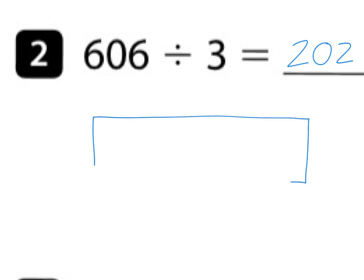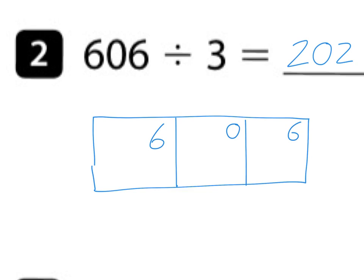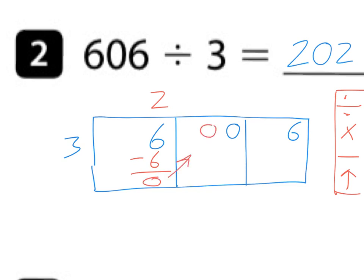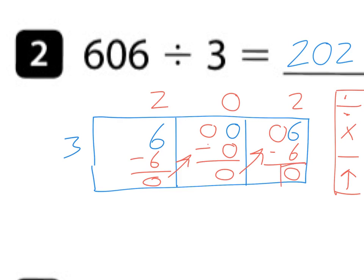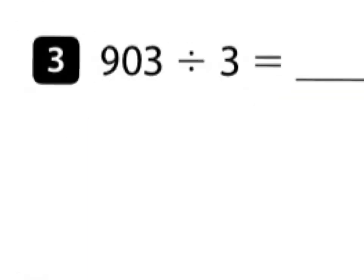Let's use the pop-up method to check our work. There are three numbers in our dividend, so we put 606 in the top right corner and put our divisor out here. Divide, multiply, subtract, bring up — our four steps. 3 goes into 6 two times, 2 times 3 is 6, subtract, bring up. 3 goes into 0 zero times, bring up. 3 goes into 6 two times, 2 times 3 is 6, subtract — remainder is zero. Our quotient is 202.